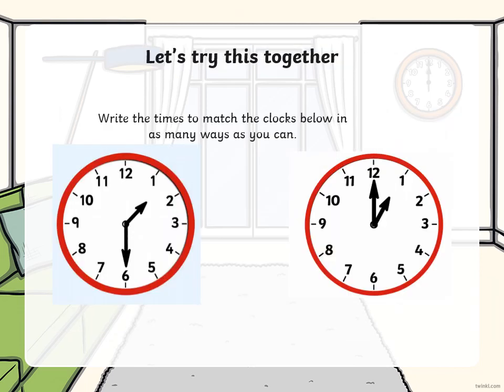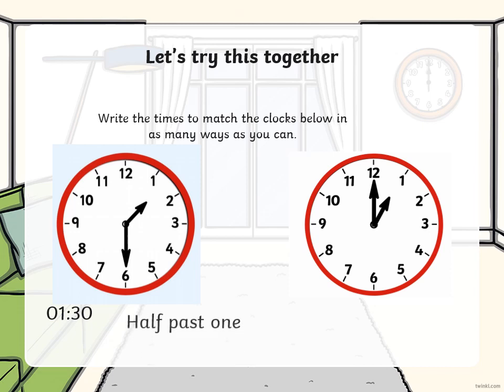Let's try this together. Write the times to match the clocks below in as many ways as you can. Our hour hand is the short hand and it's between the one and the two, so it's going to be after one — one something. Our minute hand, the longer hand, is pointing to the six, so when it's pointing to the six it's half past. So our time is going to be 1:30 or half past one. In digital time: 1:30. In written time: half past one and 1:30.